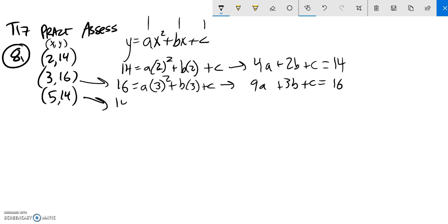And then lastly, Y is 14 when X is 5. So A would be 5 squared plus B times 5 plus C. 5 squared is 25. So 25A plus 5B plus C is equal to 14. So now I just basically have this system to solve.